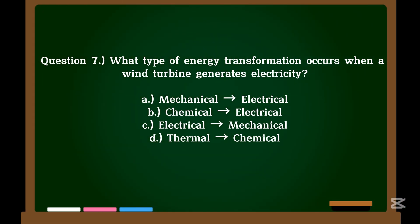Question 7. What type of energy transformation occurs when a wind turbine generates electricity? A. Mechanical → electrical. B. Chemical → electrical. C. Electrical → mechanical. D. Thermal → chemical.